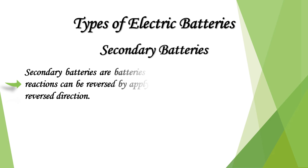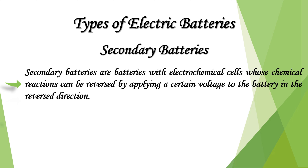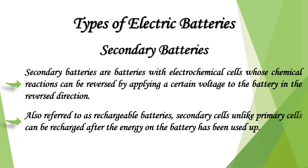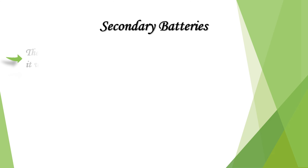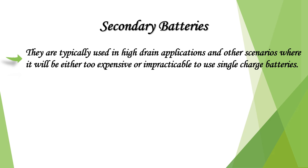Secondary batteries have electrochemical cells whose chemical reactions can be reversed by applying a voltage in the reverse direction. Also referred to as rechargeable batteries, secondary cells can be recharged after the energy has been used up. They are typically used in high-drain applications and other scenarios where it would be too expensive or impractical to use single-charge batteries.